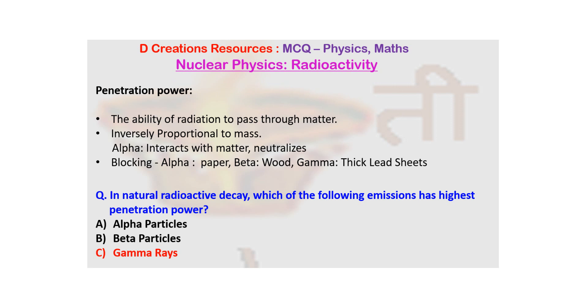So gamma rays in that sense are most dangerous because they have very high penetration power, even in the nuclear explosions. Or even when atomic bomb was dropped on Hiroshima and Nagasaki,